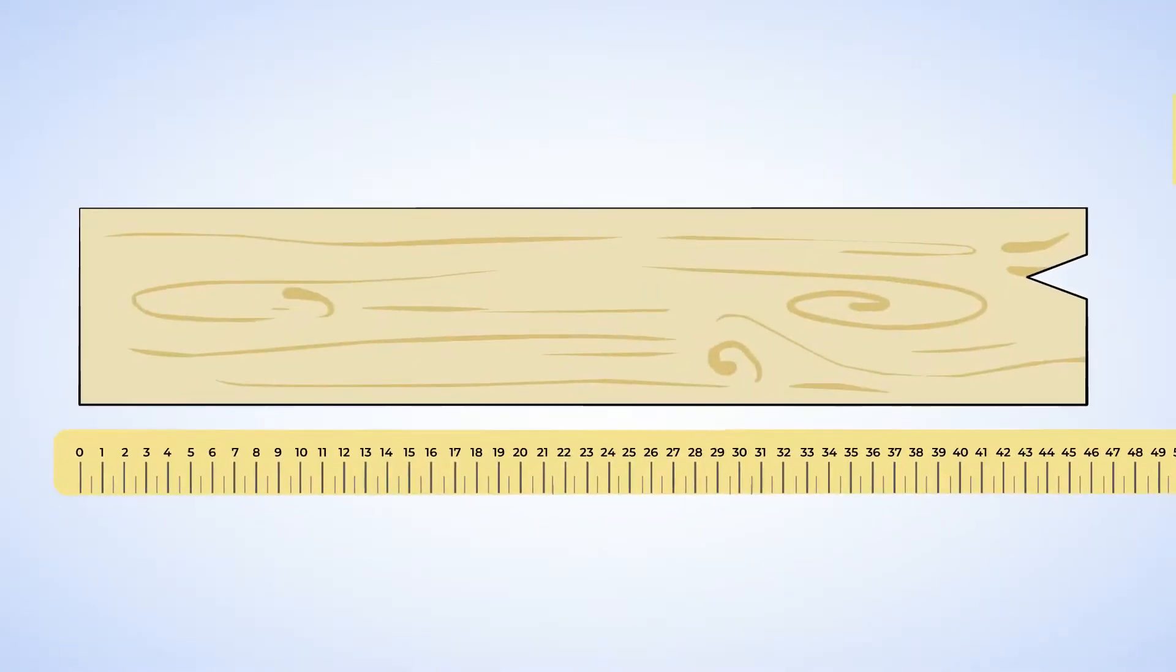Next up, let's measure the wood plank. Now this is being measured on a meter stick and the left side is perfectly aligned and we can see that the plank is 46 centimeters long. Nice!